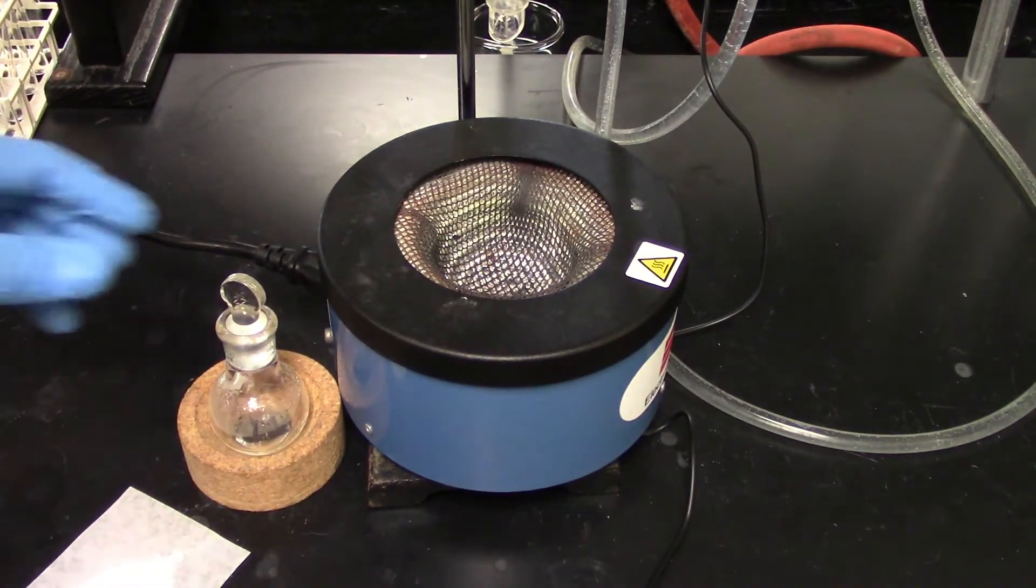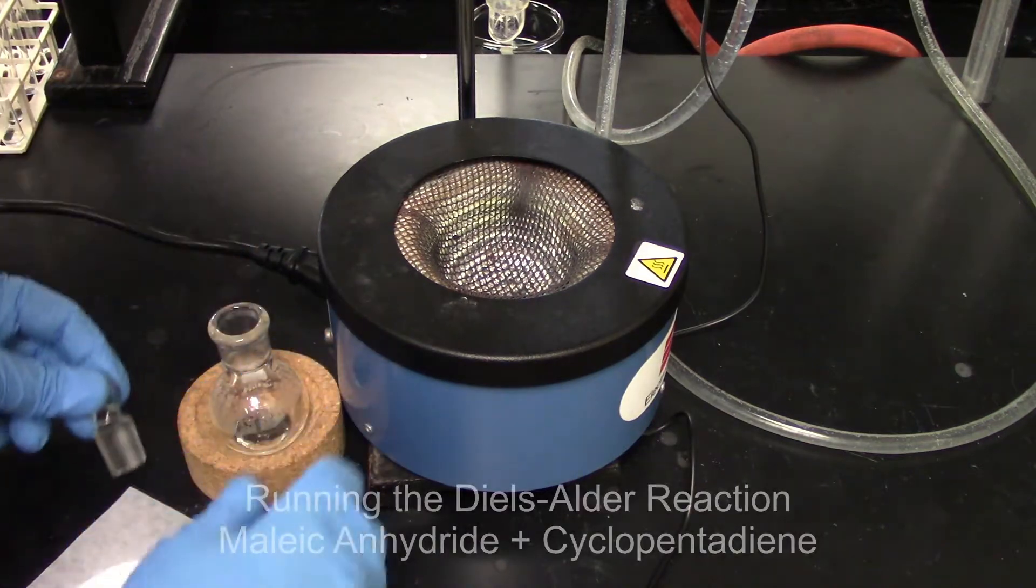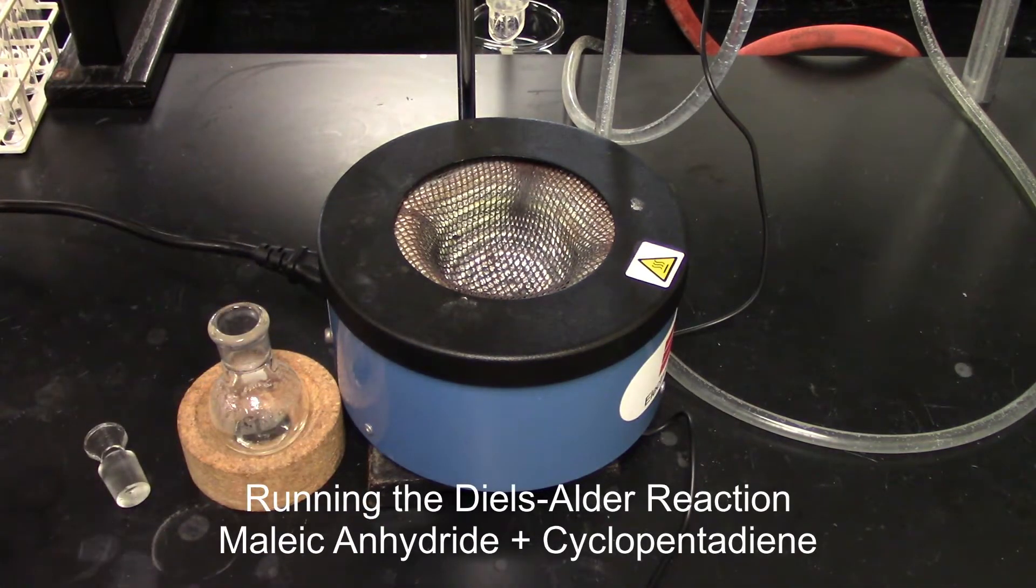Alright, so my material is cooled down. Now what we're going to do is add the maleic anhydride, and this is going to be acted on by cyclopentadiene.